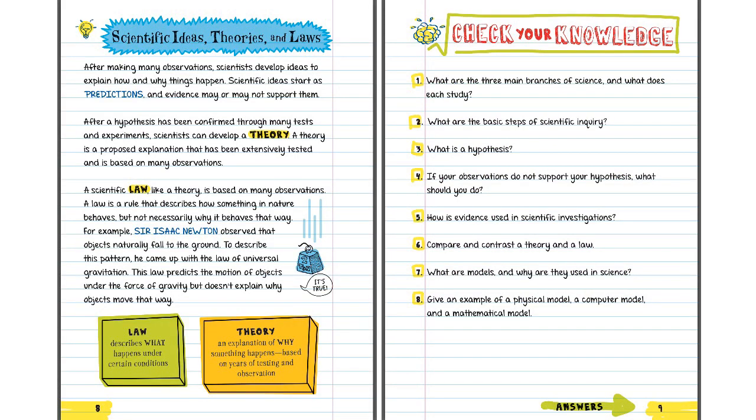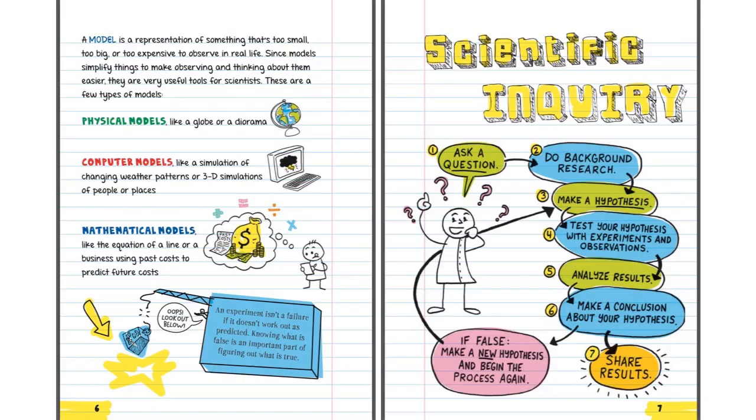Question number two. What are the basic steps of scientific inquiry? I think I saw this. Oh, there it was. Page seven. Look at that. There they are. Ask a question. Do background research. Make a hypothesis. Test your hypothesis. Analyze results. Make a conclusion. Share your results.